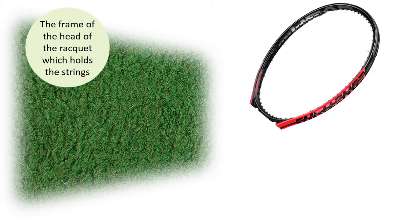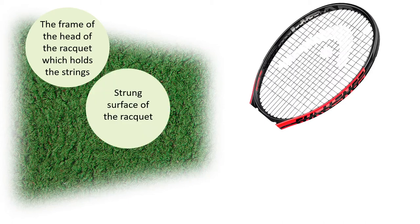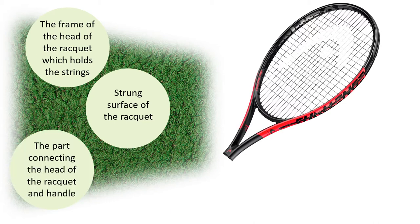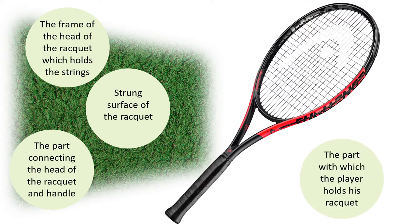Before presenting the racket's characteristics, we'll take a look at a brief description of its different components. Let's start with the beam — the frame of the head of the racket which holds the strings. We then have the strings, the strong surface of the racket, followed by the throat which is the part connecting the head of the racket and the handle, and finally the handle, the part with which the player holds his racket. Each component has its own characteristics that influence the racket choice.